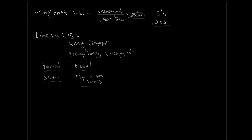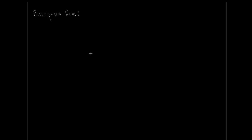We also have a few other metrics to consider. The next one is the participation rate. What we're looking at with the participation rate is how many people in our population are wanting to work, wanting to participate in the wage economy. So: participation rate = labor force / population × 100%, showing us the proportion of people that are trying to work or are working relative to the overall population.